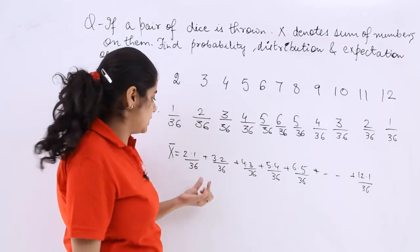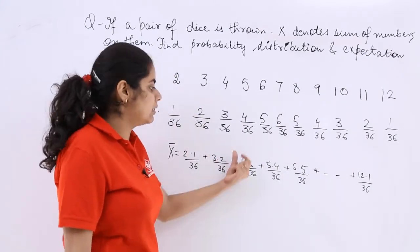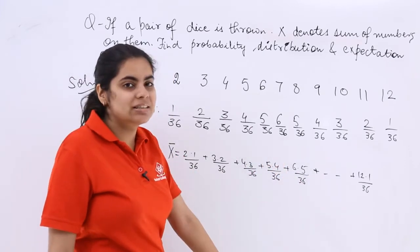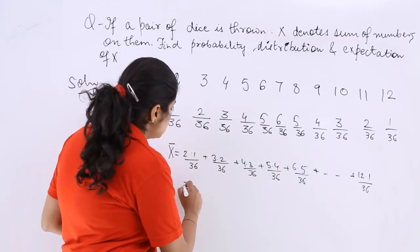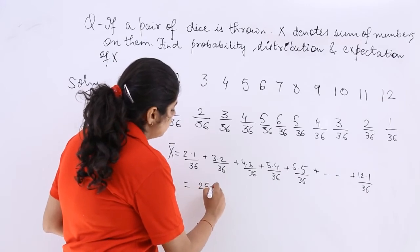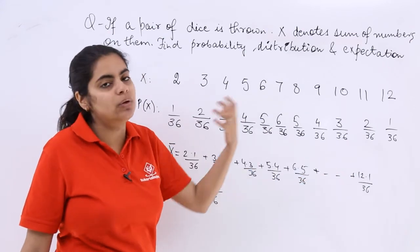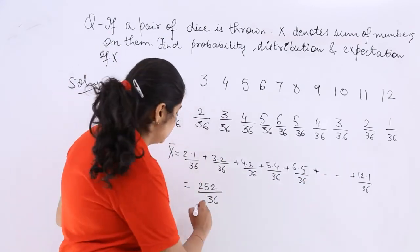You just simply multiply and divide by 36. That means 3 by 36 plus 6 by 36 plus 12 by 36 plus 20 by 36 plus 30 by 36 and so on. So what will be the answer like? It will be 252 by 36. The numerators will add up to 252. The denominator will have the LCM as 36.